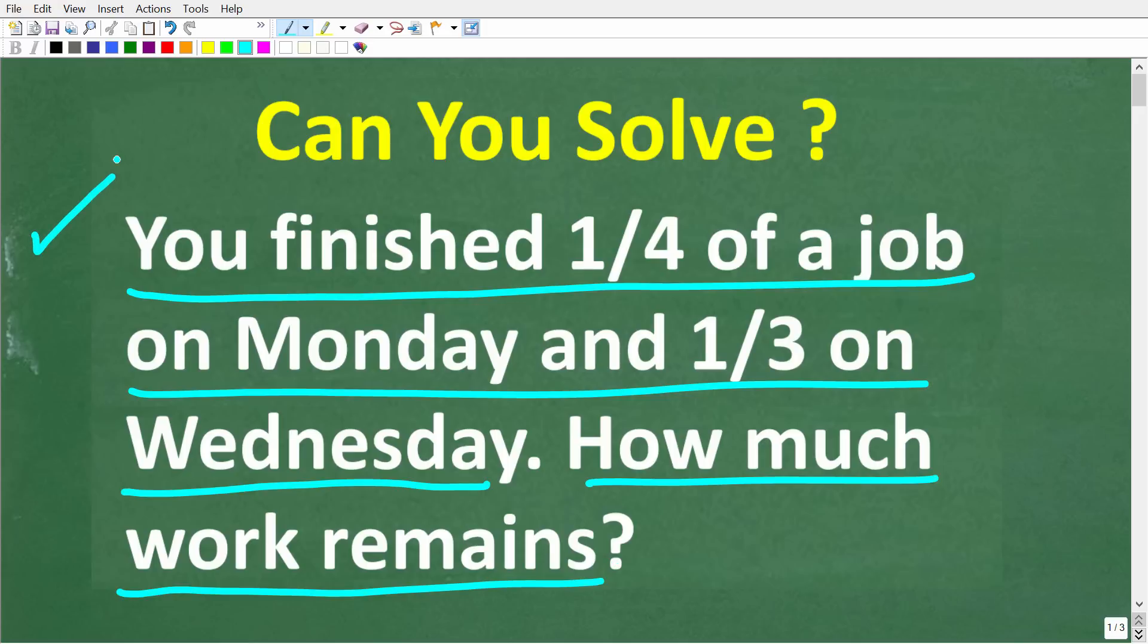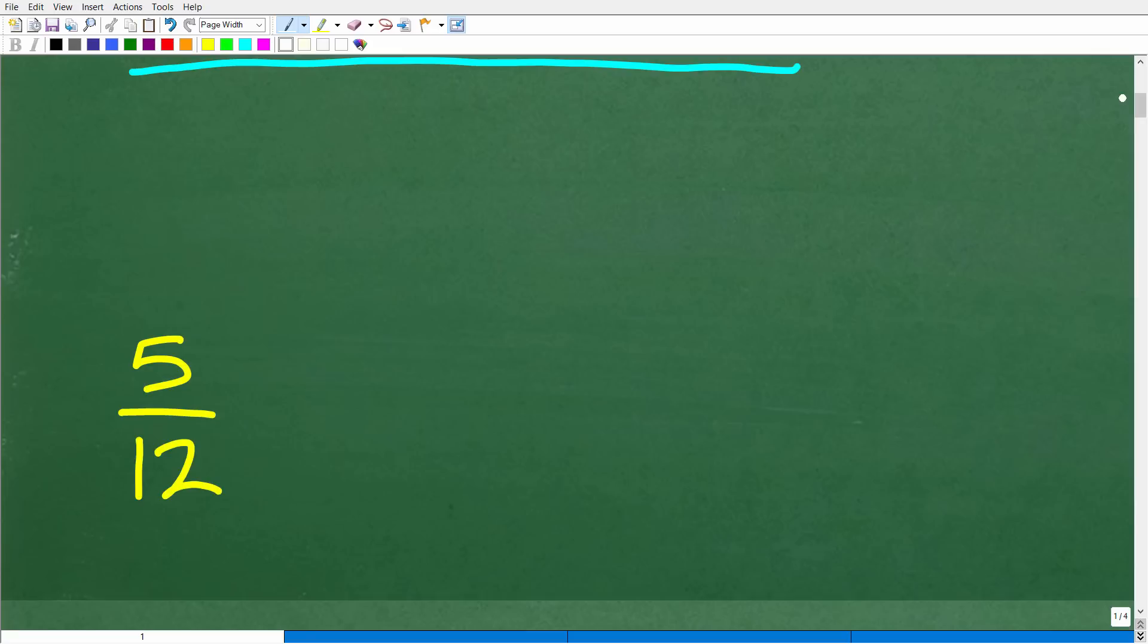Then of course, I'm gonna solve this problem step by step. All right, so one more time. You finished one fourth of a job on Monday and one third of this job on Wednesday. How much of this job or work remains? Okay, so let's go ahead and see the correct answer right now. The answer is five twelfths.